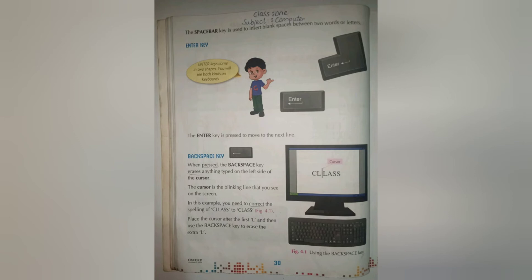We use the space bar to insert a blank space between two words or two letters. If we are writing a sentence on the computer, we write one word, then press the space bar to insert a blank space, then write the second word. If we don't put a blank space between words, they all run together and we can't understand them. So we use the space bar to separate the words and make them easy to understand.